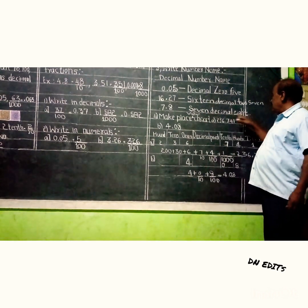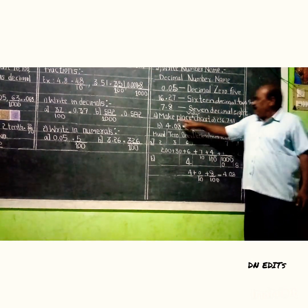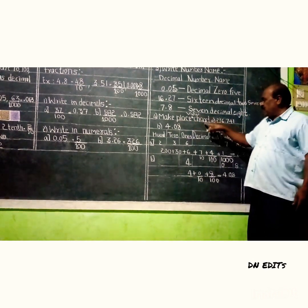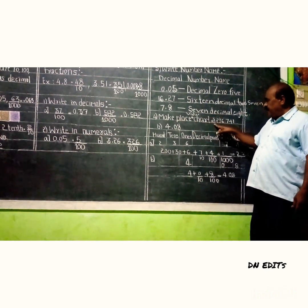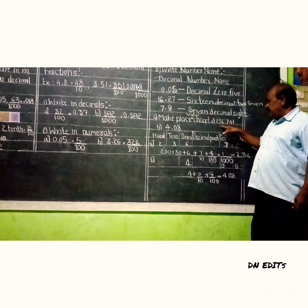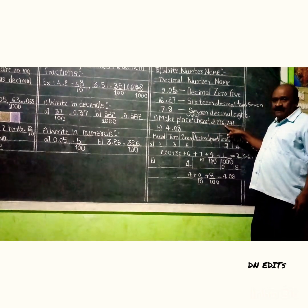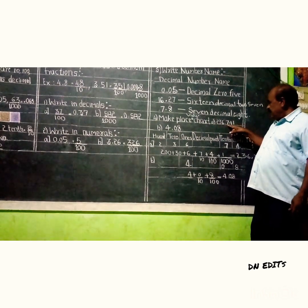Seven decimal eight. Now make your place value chart here. We have 236.741 in the place value chart.